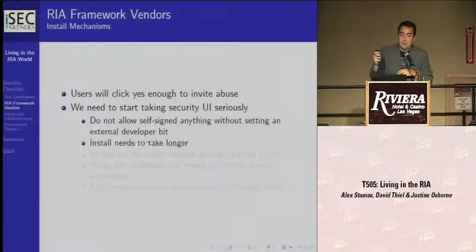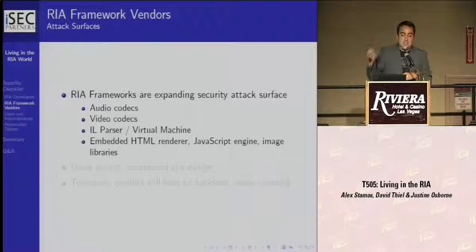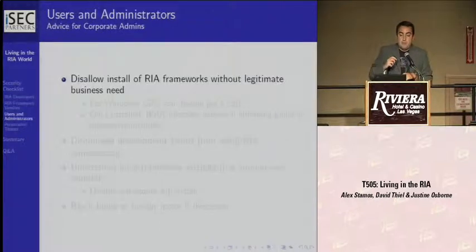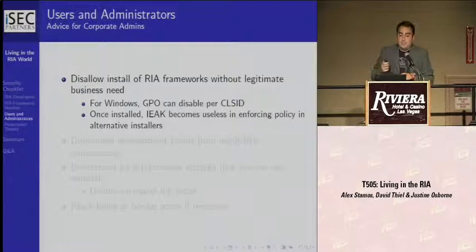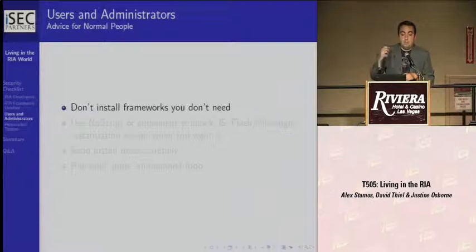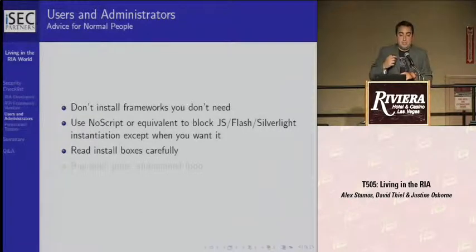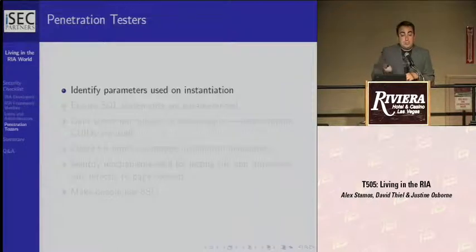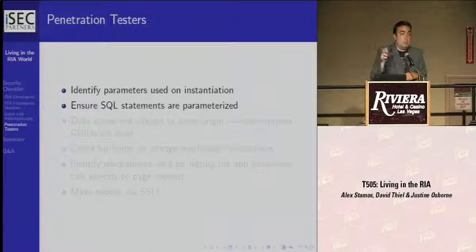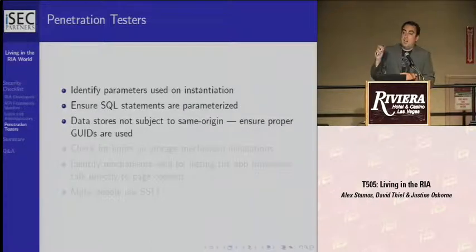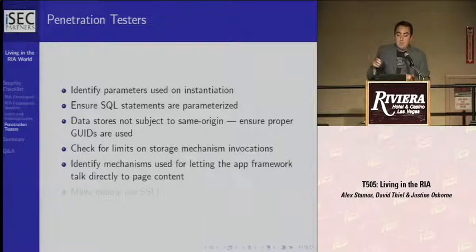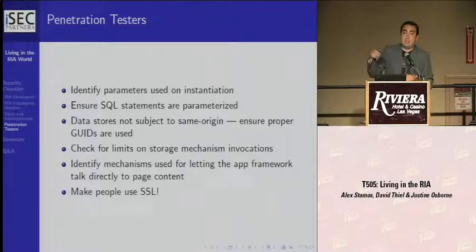Some checklists. If you're a security professional, our recommendations are looking at the attack surface such as the IL parser in the new virtual machines and embedded HTML rendering. If you're a corporate admin, don't let your users install RIA frameworks — you can use something like Group Policy Objects to do this in IE. If you're a normal person, don't install an RIA framework unless you actually need it — read the install boxes carefully and get ready for the apocalypse. If you're a penetration tester, look for dangerous parameters passed into an AIR application on instantiation, make sure people are using parameterized SQL statements, and make sure data stores are using GUIDs for naming conventions so cross-site scripting attacks might not be able to find them.